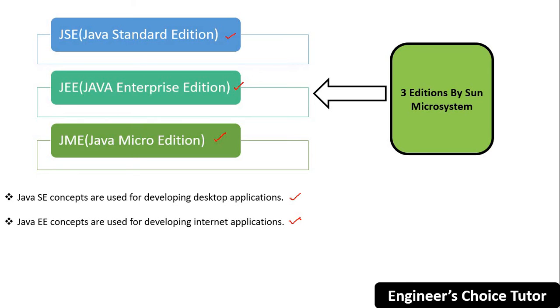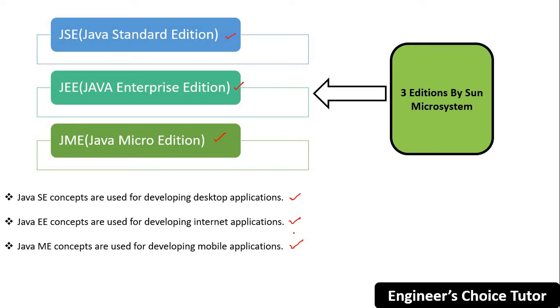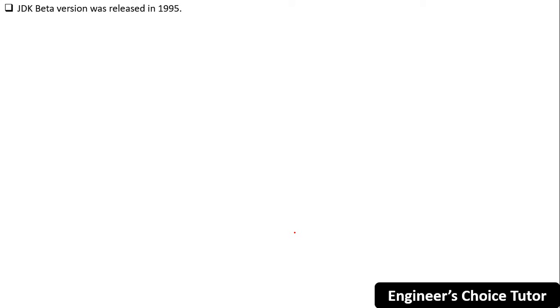Java ME stands for Java Micro Edition, sometimes also referred to as Java Mobile Edition, because Java ME concepts are used for developing mobile applications. So the three editions are Java SE, Java EE, and Java ME.